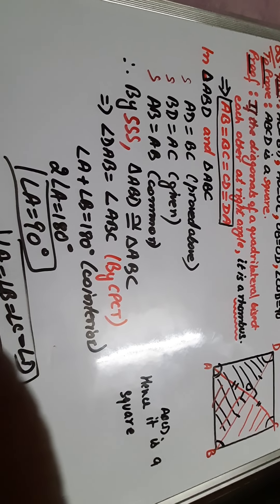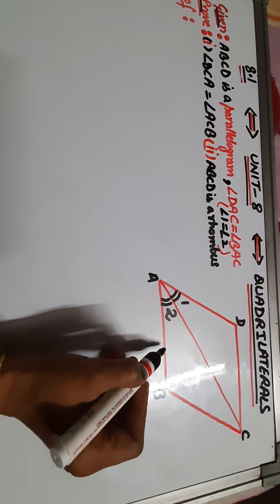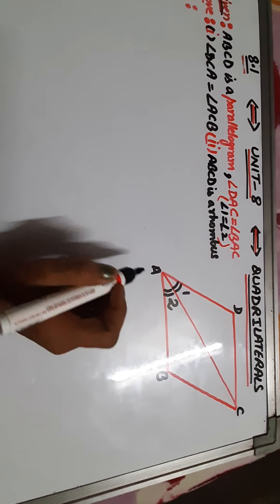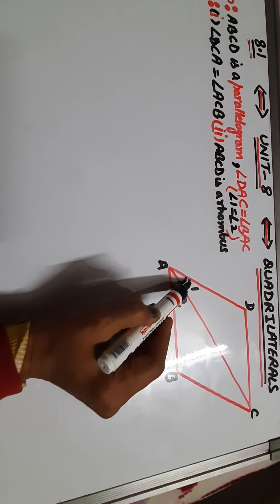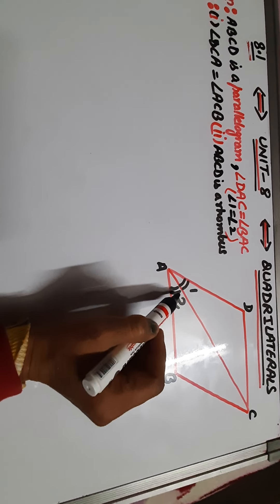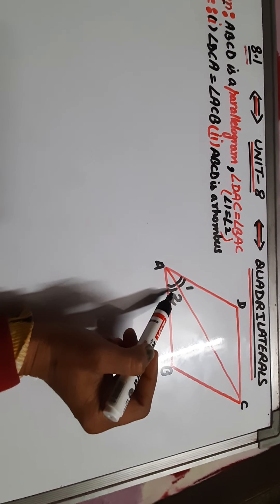Now let's move on to question number 6. Dear students, question number 6: diagonal AC of a parallelogram — note that this is a parallelogram, meaning opposite sides are equal and parallel, and opposite angles are also equal. AC bisects angle A — bisect means divide into two equal parts. So that it bisects angle C also, and ABCD is a rhombus means all sides are equal. This is what we have to prove. So this is a parallelogram, meaning opposite sides are equal: AB is equal to CD, BC is equal to AD — given. AC bisects means two equal parts: angle DAC is equal to angle BAC — in short, angle 1 is equal to angle 2.